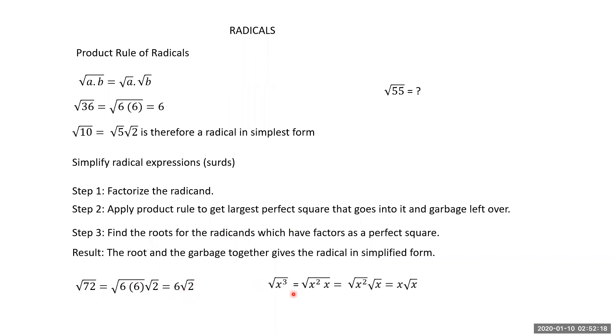Similarly, the square root of x cubed equals root of x² times x, which equals x times root x — x squared is the perfect square part, and root x is the leftover. So x times root x is the answer.